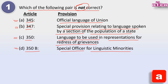Answer is A. Article 345 is the official language of not union - it is the official language of the state. For union, which article is there? That is Article 343.